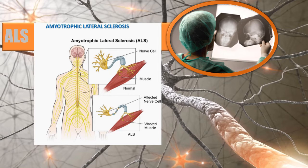ALS, or Lou Gehrig's disease (amyotrophic lateral sclerosis), is an adult-onset upper and lower motor neuron disease characterized by progressive weakness, muscle wasting, spasticity, and eventual paralysis. There is no known cure. Monitor respiratory status, especially in terminal stages. Medication management targets pain, fatigue, spasticity, excessive secretions, and sleep disturbances. Help the patient with turning, early ambulation, transferring, and incentive spirometry. In terminal stages, arrange hospice care at home or community support resources.